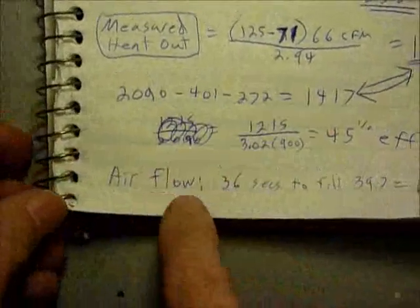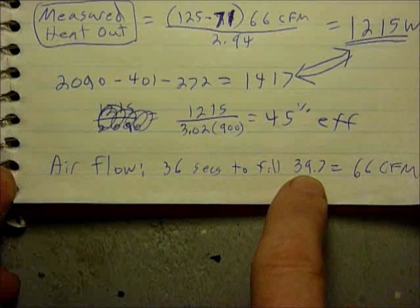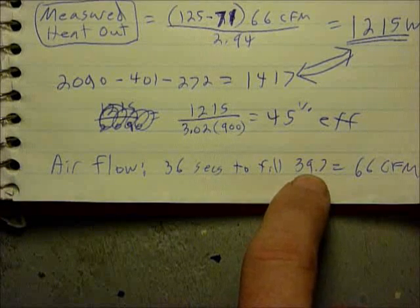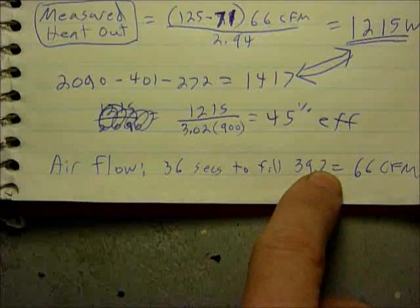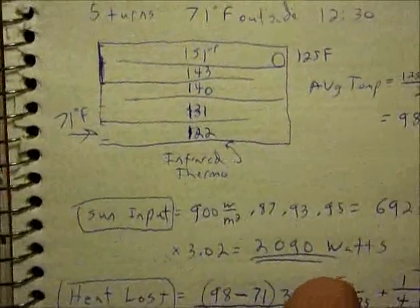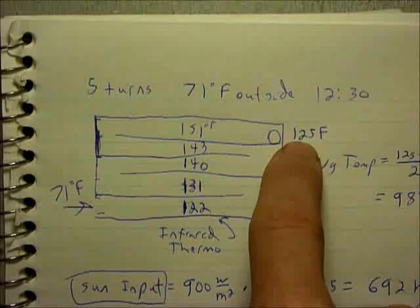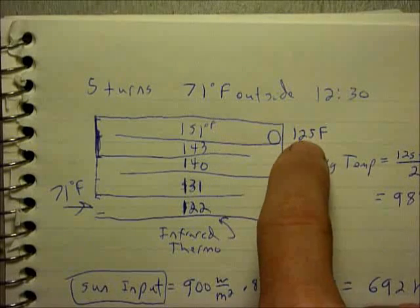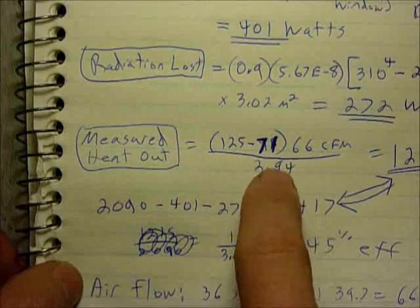To measure air flow I taped together two 33 gallon trash bags which gave me 39.7 cubic feet. It took 36 seconds for the fan in this setup to fill it up when the temperature outside was 71 fahrenheit. There's problems if you fill it up while it's at this temperature because the heat capacity of air is only at about 68 degrees fahrenheit. The temperature gets up this high, this conversion factor should be larger which would reduce it.